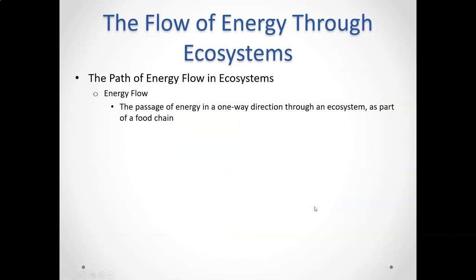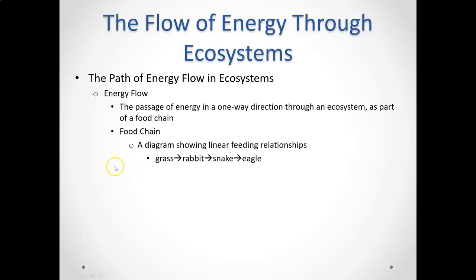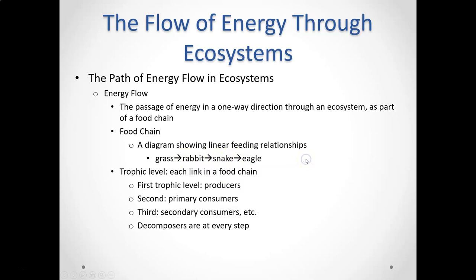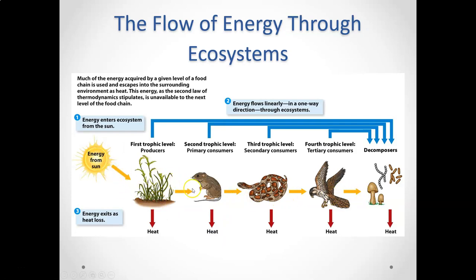When looking at how energy moves through an ecosystem, it's a one-way direction along a food chain. The sun provides energy, the grass uses it to create sugars through photosynthesis, the energy passes from the grass to the rabbit because the rabbit ate the grass, then from the rabbit to the snake, then from the snake to the eagle. You can see arrows used to dictate the flow of energy in a linear feeding relationship. These trophic levels are just links in a food chain.